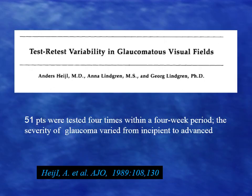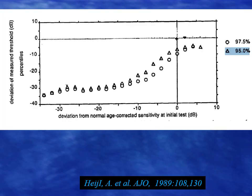There is a very important paper published back in 1989. The authors tested 51 patients four times over four weeks — the visual field was done once every week. These patients had different severities of glaucoma, and the authors calculated the changes in sensitivity values at each location across the four tests.